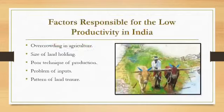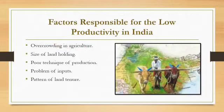Factors responsible for low productivity in India. First, overcrowding in agriculture — we can take the example of intensive subsistence farming. Second, size of land holdings — Indian farmers hold very small areas of land for cultivation, and some are even landless. Third, poor techniques of production — Indian farmers still utilize primitive tools and techniques for production, which causes low productivity.